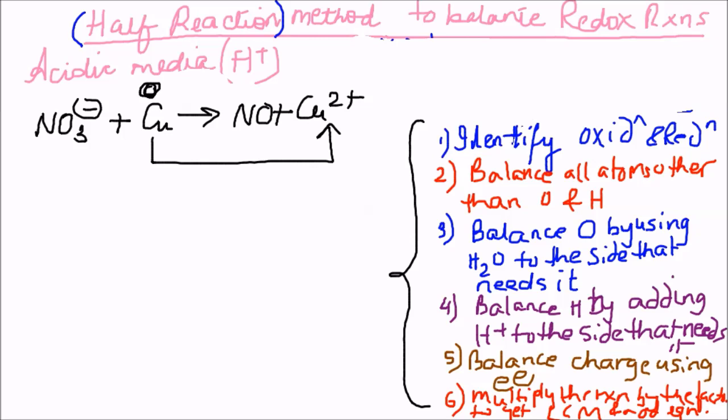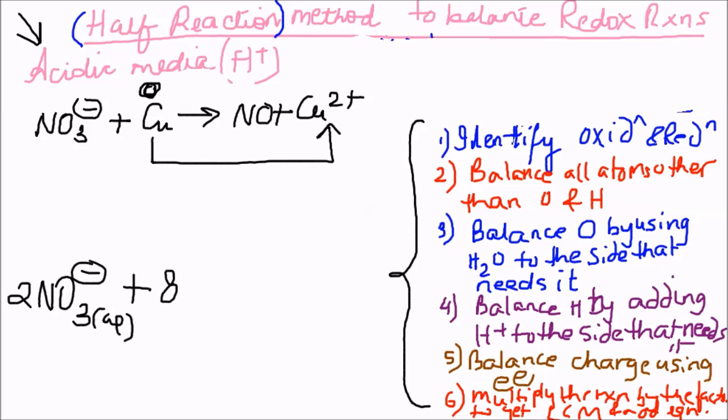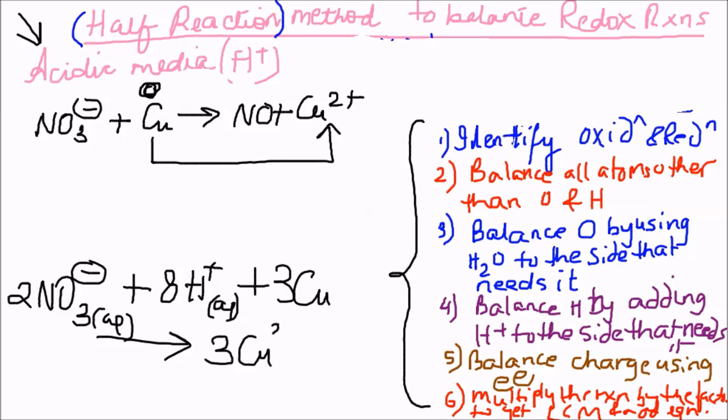Then balance atoms other than oxygen and hydrogen first, then balance oxygens using water to the side that needs it. When you add water you introduce hydrogen atoms, and since we're in acidic media you balance those using protons. Once protons are in place, balance charge using electrons. Finally, balance the electrons in the two half-reactions before adding them. The overall balanced reaction should be: 2NO3⁻(aq) + 8H⁺(aq) + 3Cu → 3Cu2+ + 2NO + 4H2O.